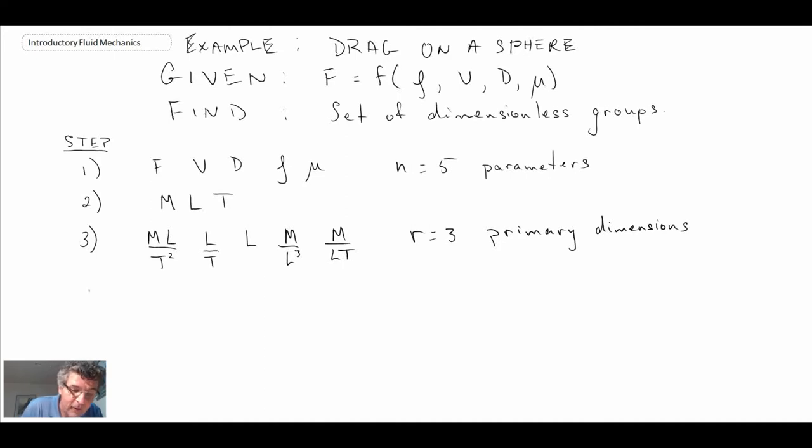Step four is to come up with repeating parameters. We should have m equals r equals three repeating parameters, which will reappear in our different non-dimensional groups. For fluid mechanics, quite often good ones to use are the density, velocity, and diameter. People have done this over and over, conducted the experiments, so that's how they're able to know these are good ones. Don't get too worried about how we picked rho, V, and D. It just turns out that they're good ones for fluid mechanics.